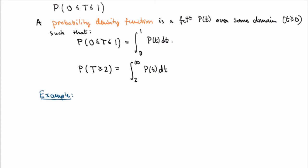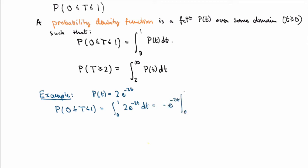Let's be more explicit. Suppose the probability density function is given by two times e to the minus two T. Then we can calculate these probabilities explicitly. For example, the probability that the waiting time is less than one minute is the integral from zero to one of 2e^(−2T) dt, which equals minus e^(−2T) evaluated from zero to one, giving minus e^(−2) plus one, approximately equal to 0.86. So 86% of calls will be answered within one minute.